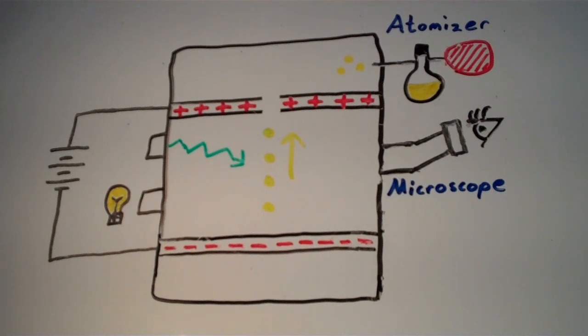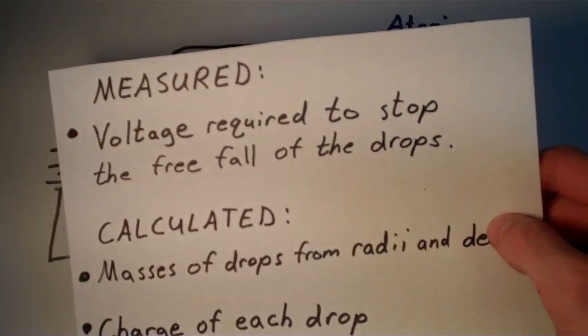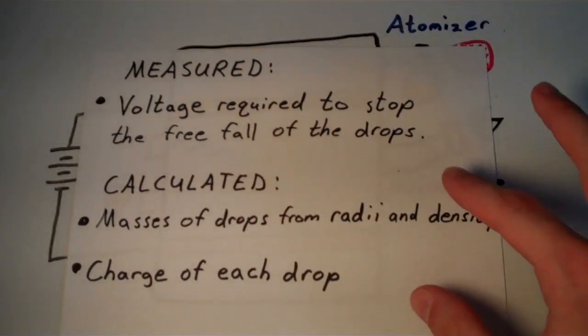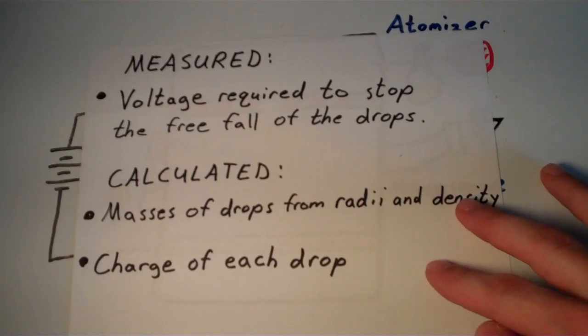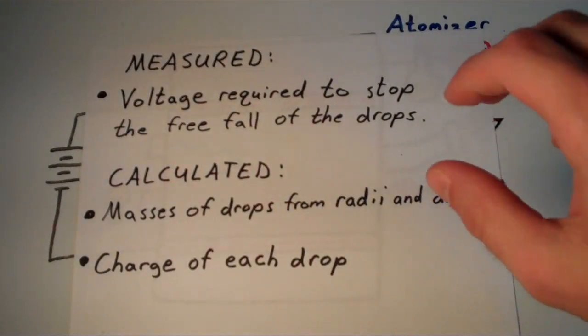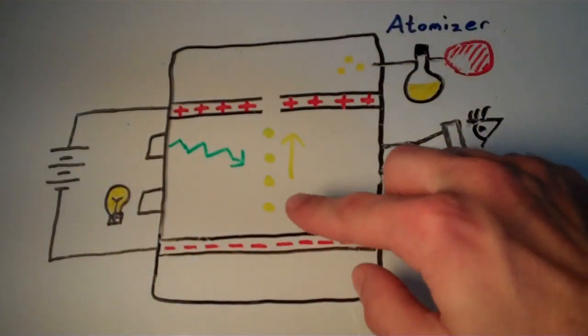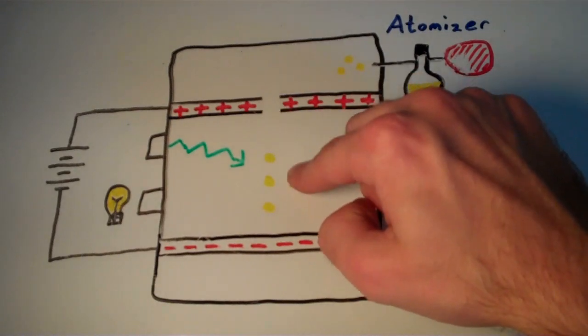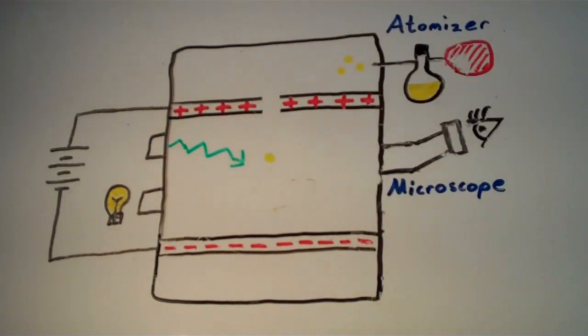So that's a basic outline of the process that Millikan used to conduct his experiment. And pretty much the rest of it is all based on calculations and reasoning. So what he measured was, he measured the voltage that was required to stop the free fall of the drops. Remember, if you apply a certain voltage, you can have just a drop sitting there suspended in the air.